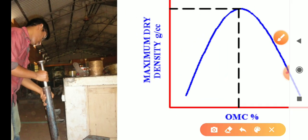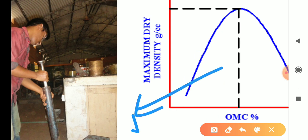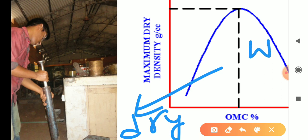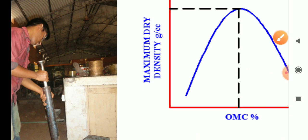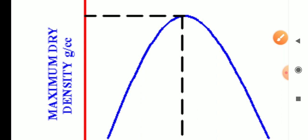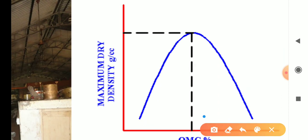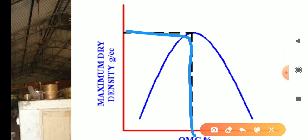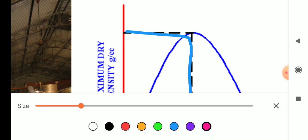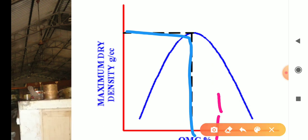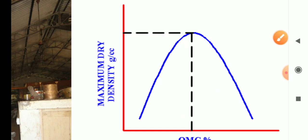Below the OMC line is the dry side and above is the wet side. If you add extra water beyond the OMC, the dry density decreases. This is why we need to find the optimum moisture content corresponding to the maximum dry density.